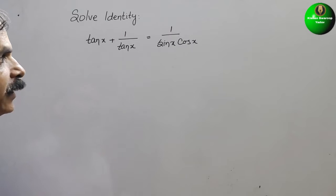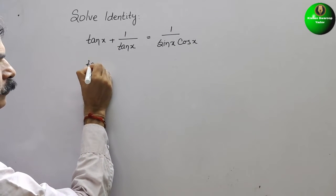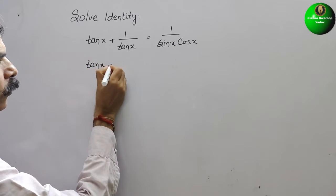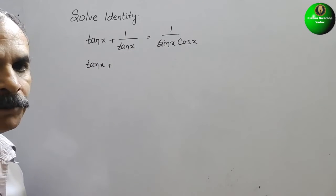So here you can see, this is your tan x. So 1 by tan x is nothing but cot x.